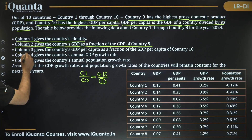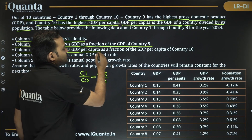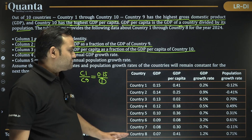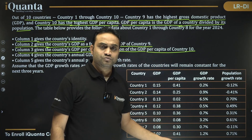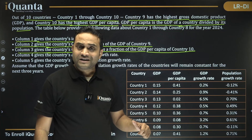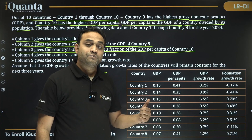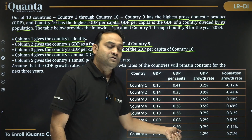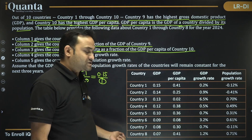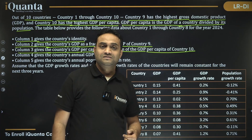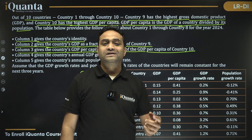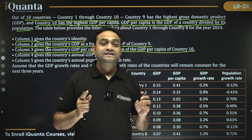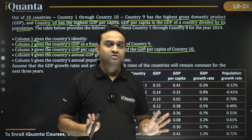Column 3 gives the country's GDP per capita as a fraction of the GDP per capita of country 10 — same logic. We will assume that the GDP per capita of country 10 is 1 unit, and these will be the values of GDP per capita of the other countries. Unless the GDP of country 9 and GDP per capita of country 10 are explicitly mentioned in the question, we don't need to worry about their actual values.